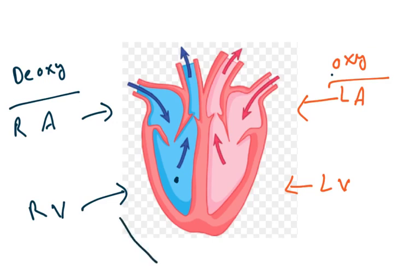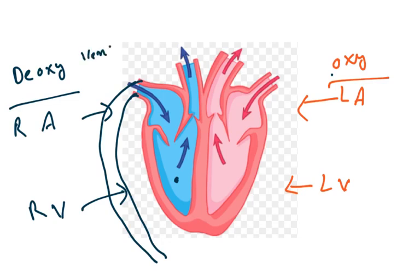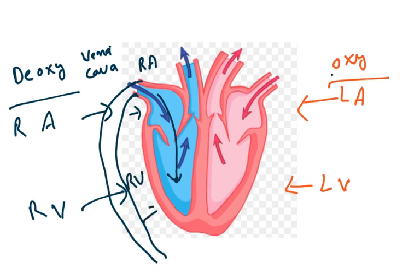From all the body parts, oxygen is utilized by the tissues, hence it gives deoxygenated blood. Deoxygenated blood gets into the heart with the help of vena cava. Vena cava carries all the deoxygenated blood and the blood gets into right atria. When this atria contracts the blood comes down to right ventricle.